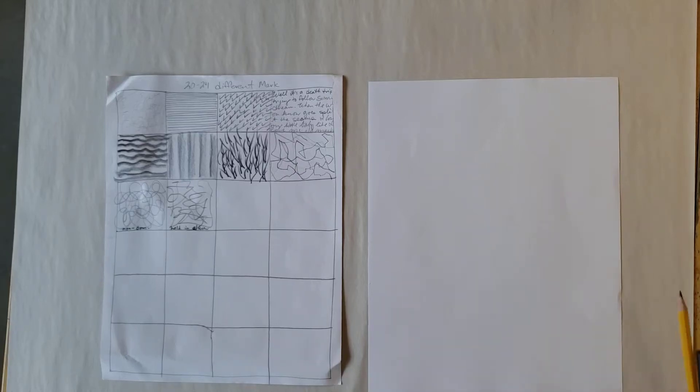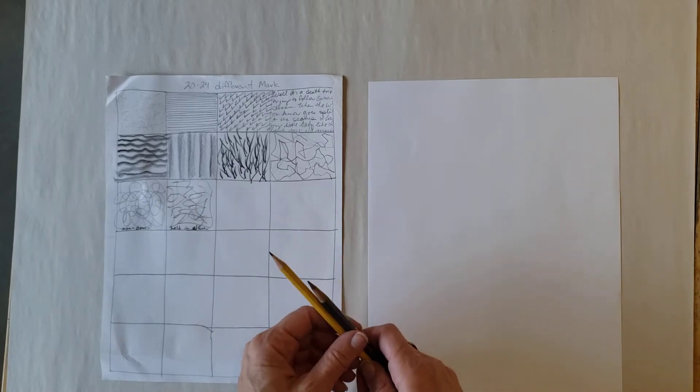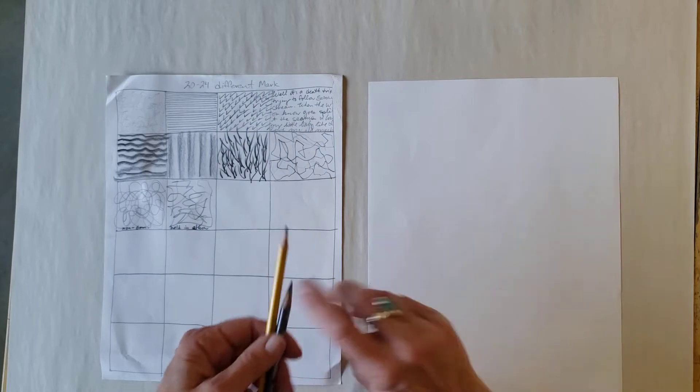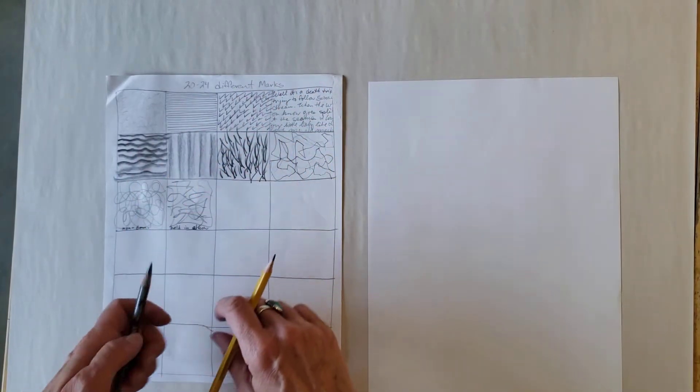Hello, this is Ms. Steinbaugh and I'm here to talk about the page of mark making we're going to do in Drawing One. We are going to make 20 to 24 different kinds of marks on one page and fill up that entire page.